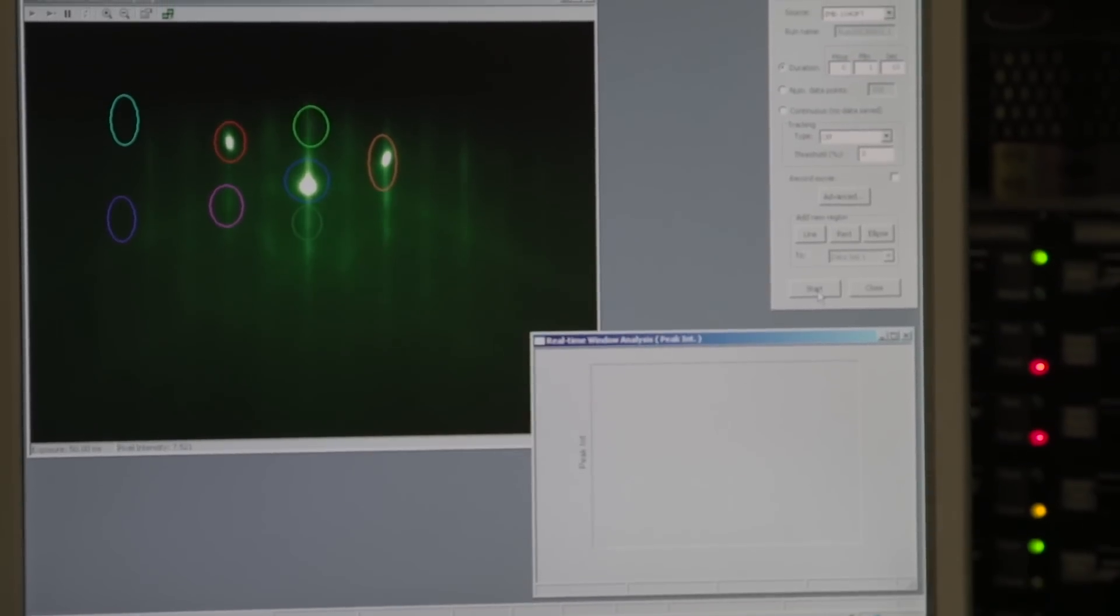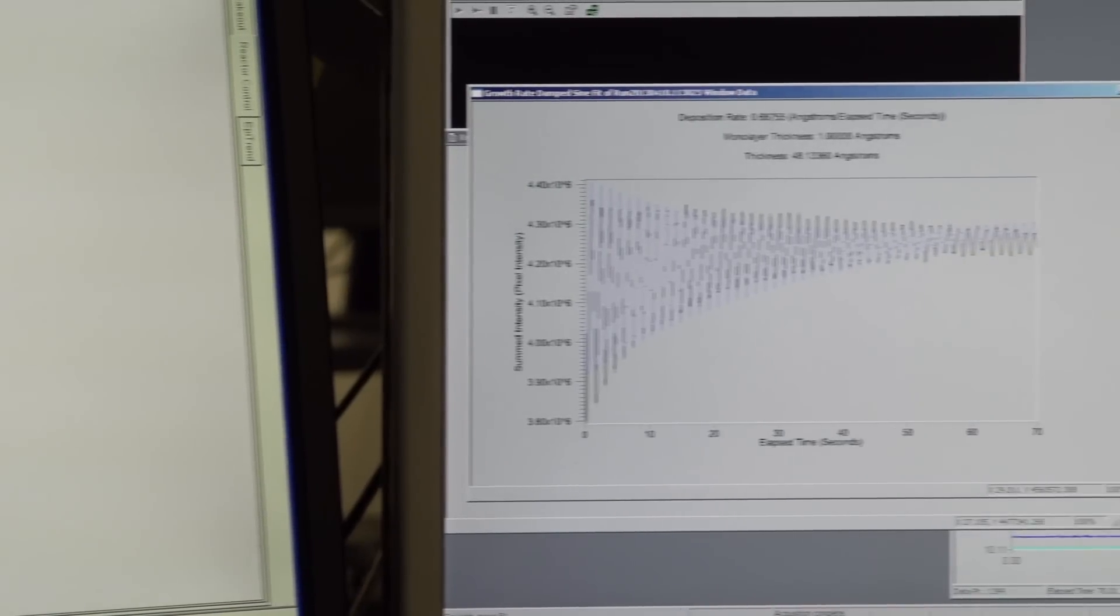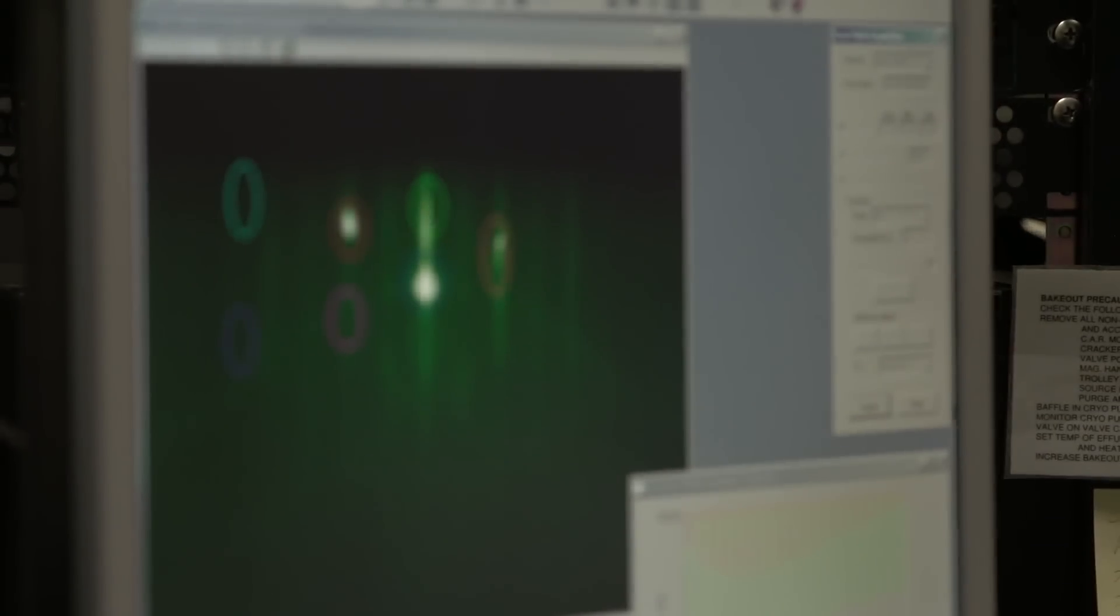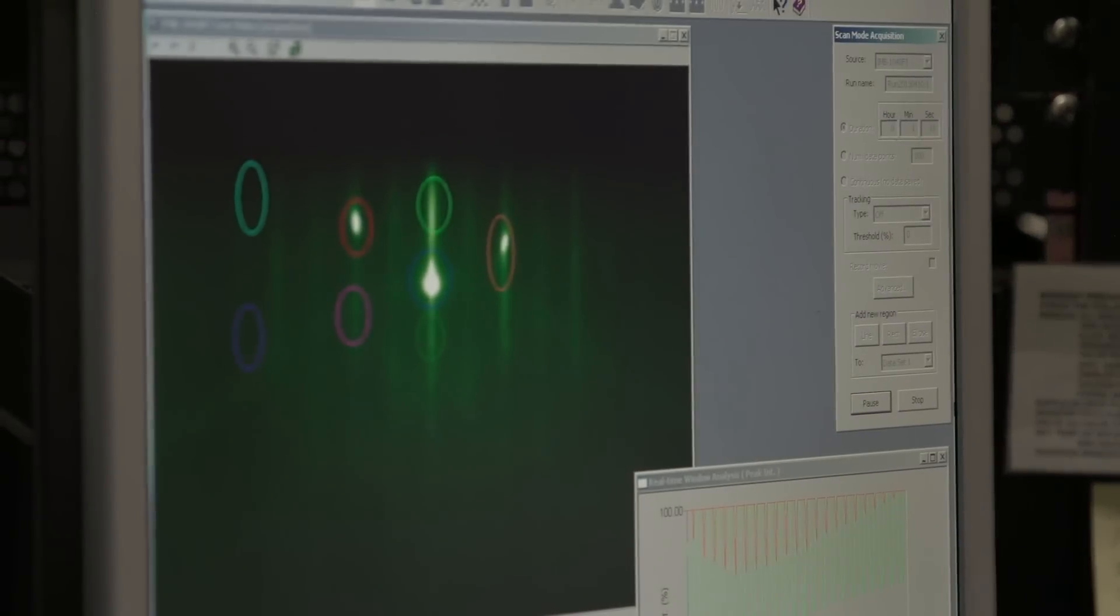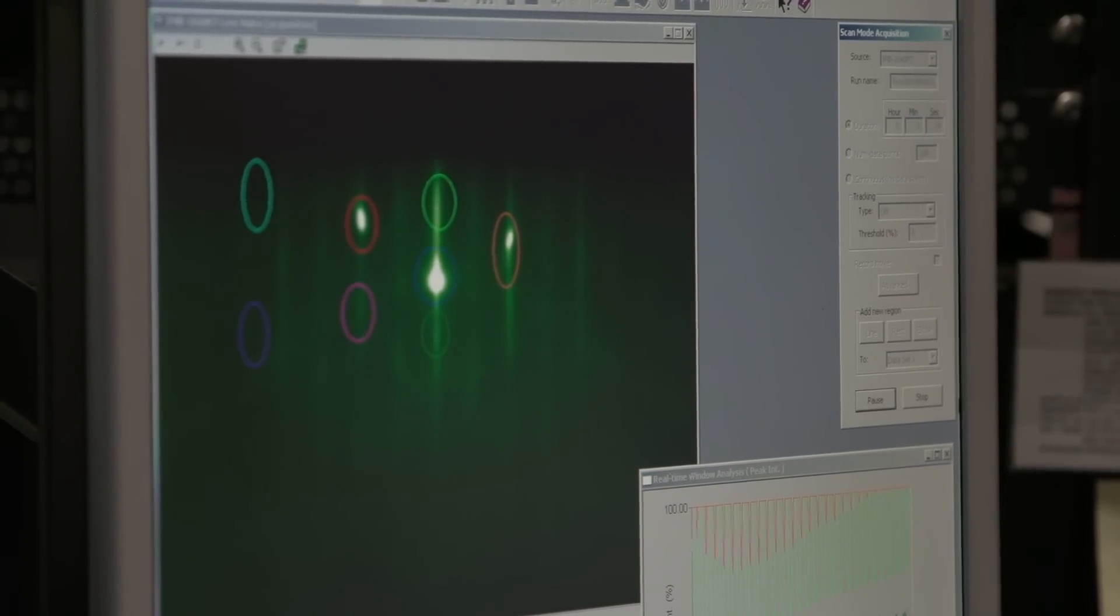But the single most critical thing for me on a day-to-day basis is that you'll actually see the entire electron diffraction pattern pulse. So if you take the KSA 400 software, and this is one of the things I love about it, you can put various circles or ellipses around various spots on the pattern and try to pick spots that are giving you the most intense oscillations.